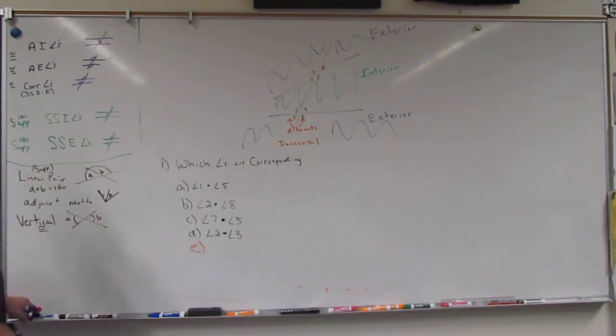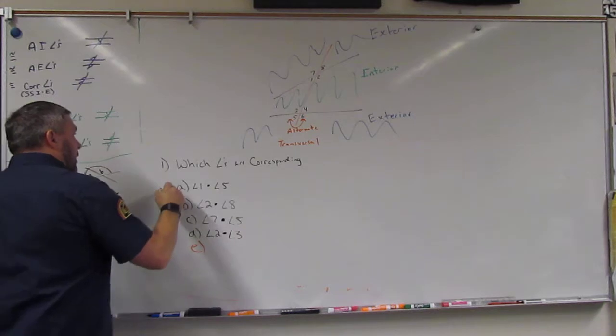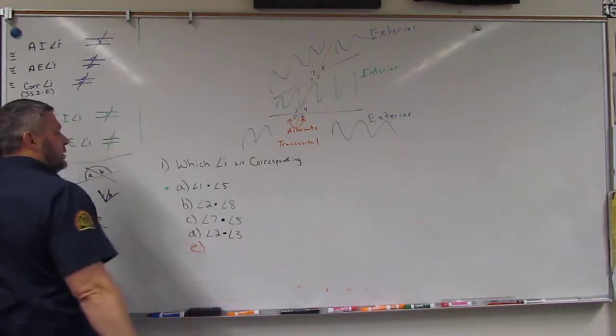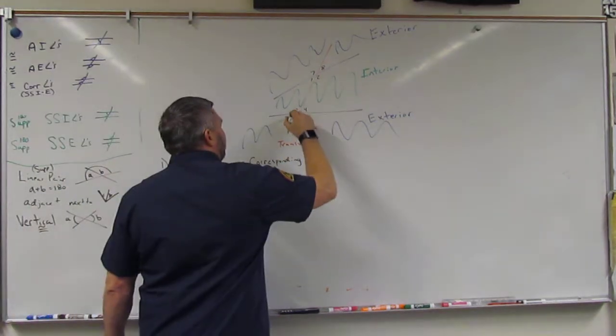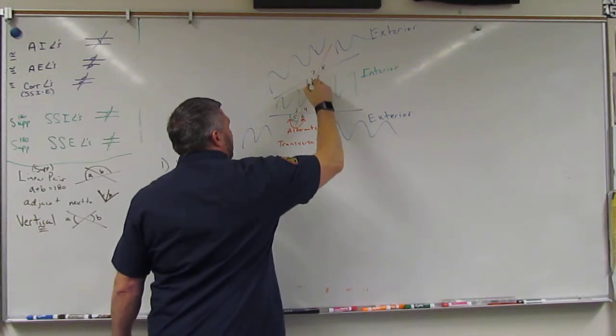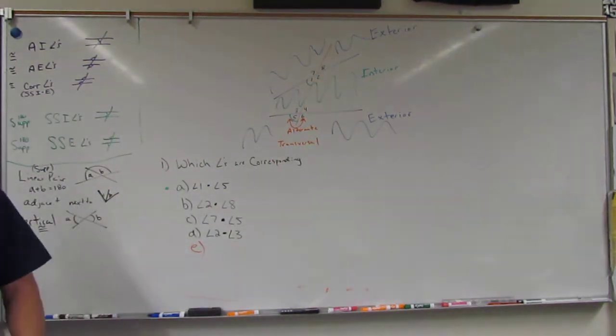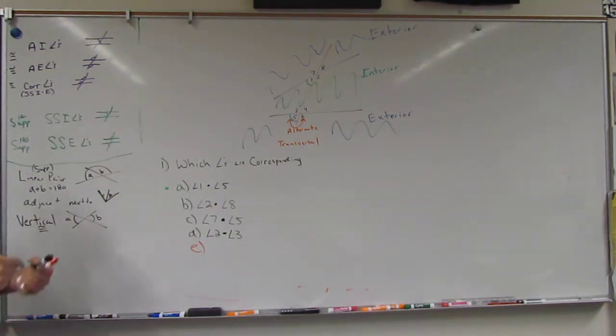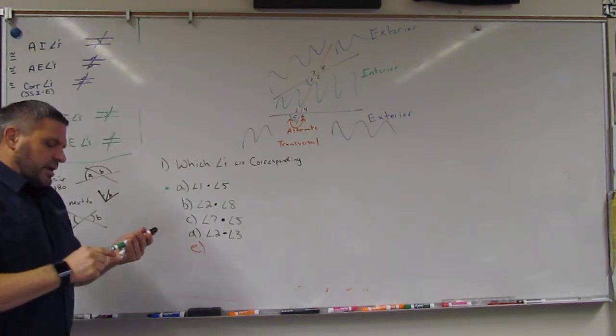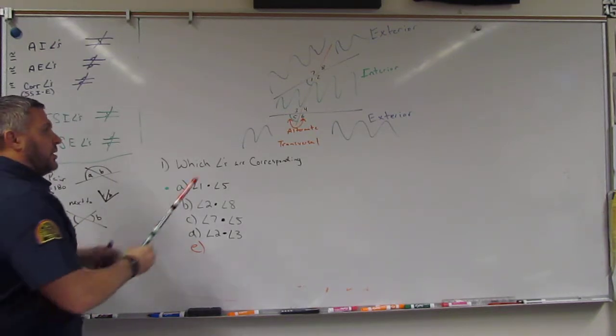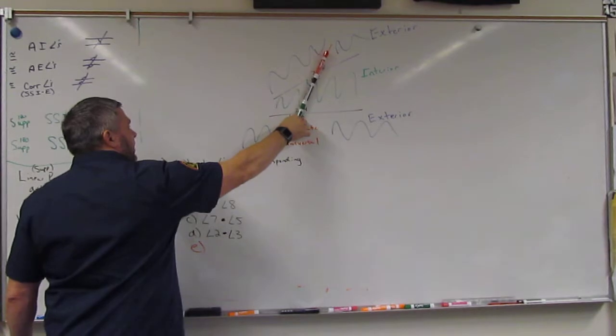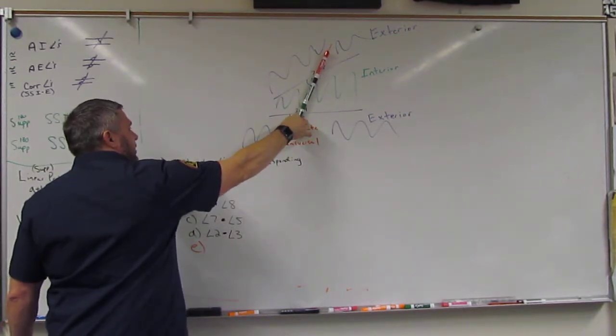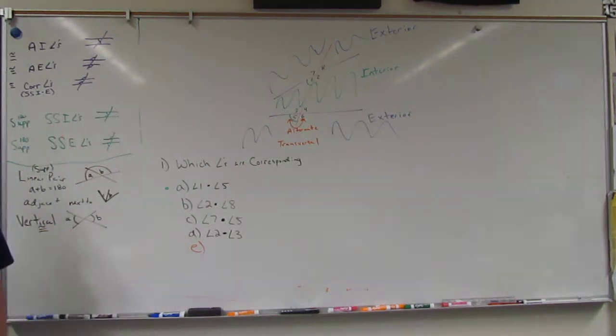So what we want to look at is, first of all, is A. One and five. So we look at five and we look at one. And what are those? Are they on the same side or are they alternating? So if we look at this line, are they on the same side? Yeah. So we know they're same side.